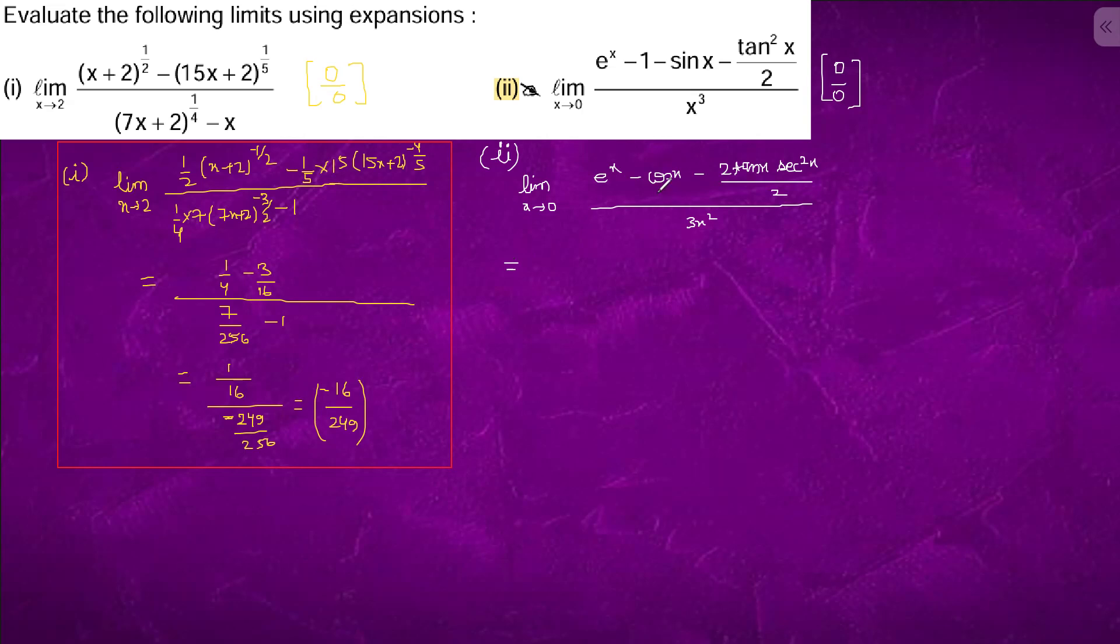So this will become 0 by 0 form. What can we do is that these two cancel. The difference is once more: e to the power x plus sin x minus 4x.